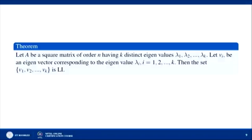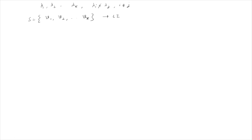Now we state and prove an important result: if A is a square matrix of order n having k distinct eigenvalues λ₁, ..., λₖ, and vᵢ is the eigenvector corresponding to eigenvalue λᵢ for i = 1 to k, then the set {v₁, v₂, ..., vₖ} is linearly independent. We will prove this by the method of induction.